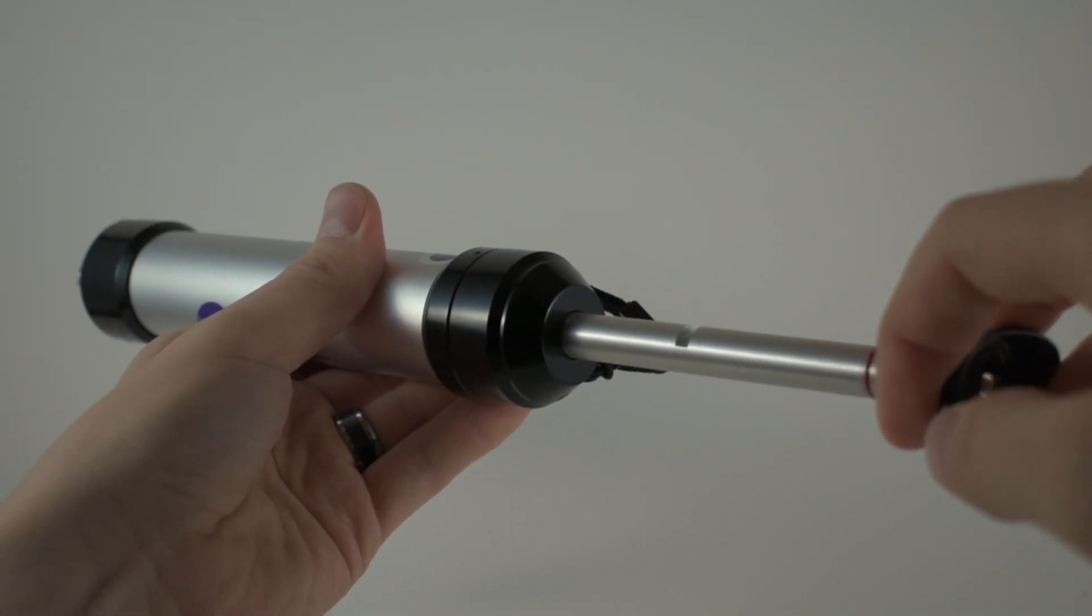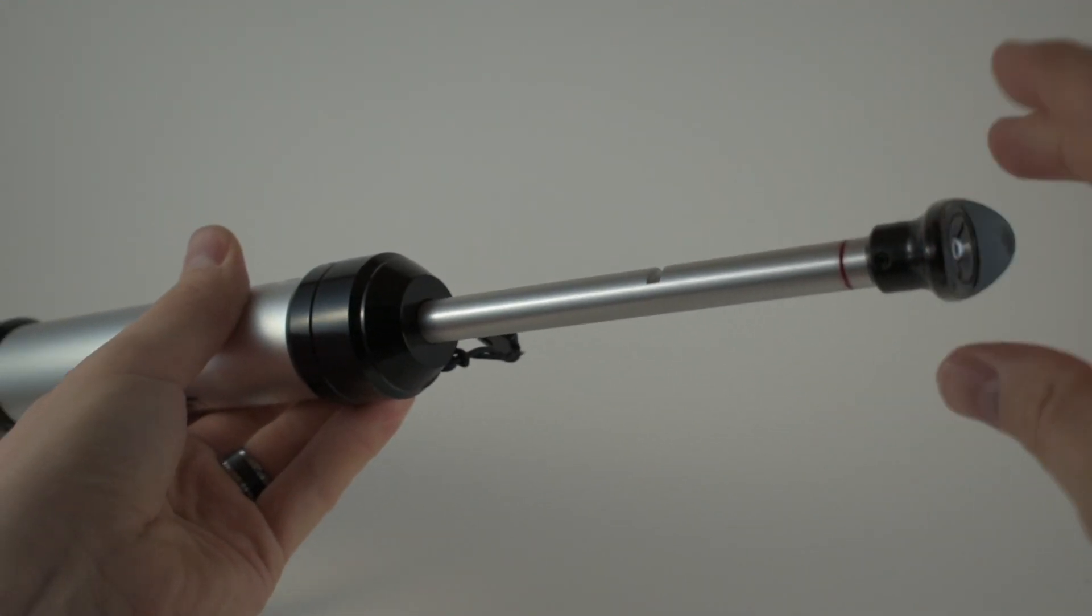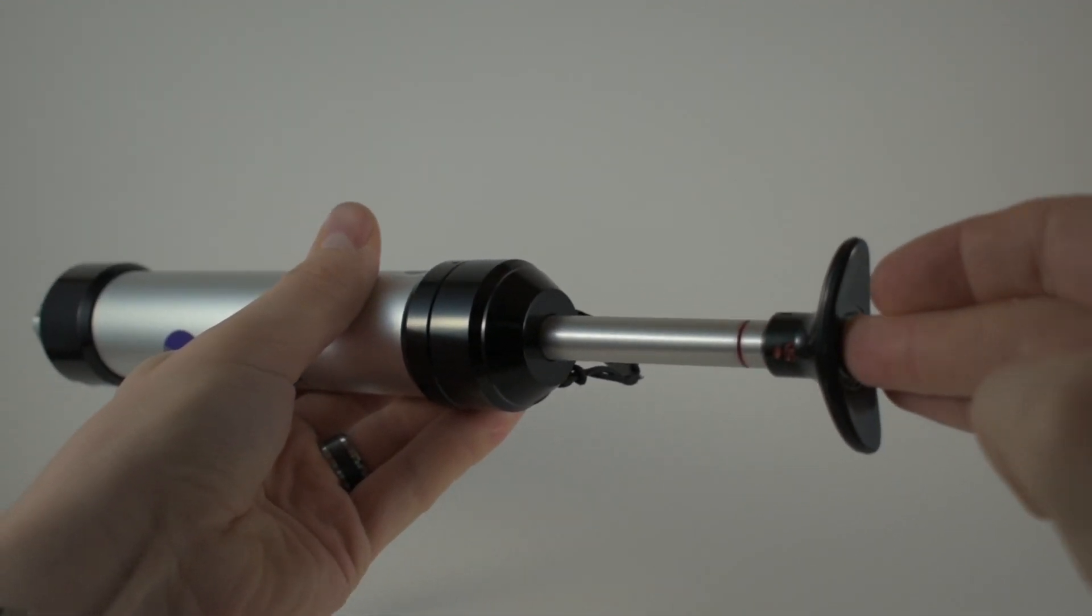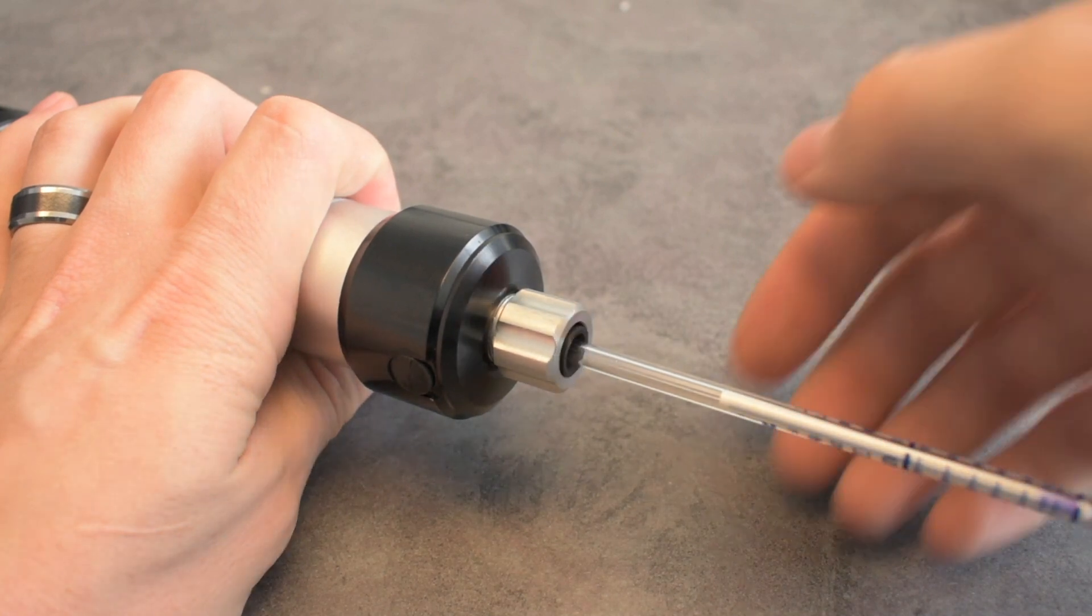For additional pump strokes, rotate the handle quarter turn left or right and push it back fully without removing the tube from the pump. Repeat the draw cycle.